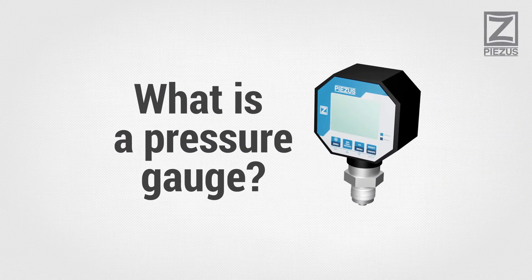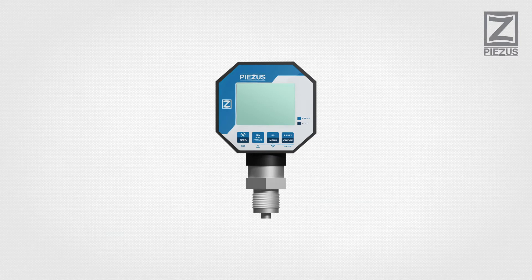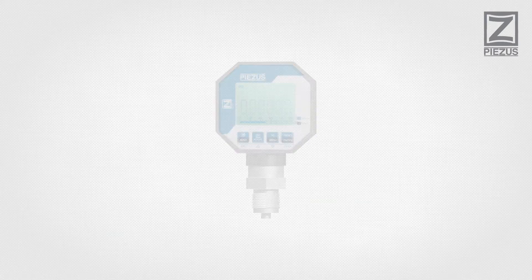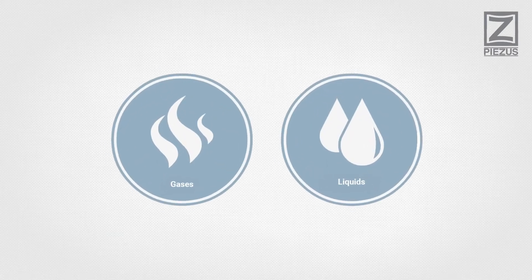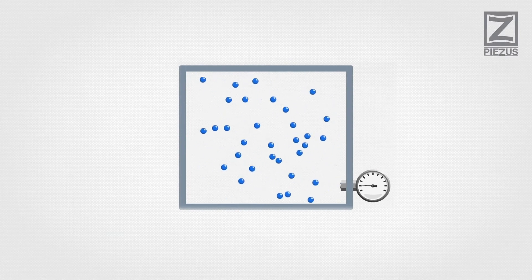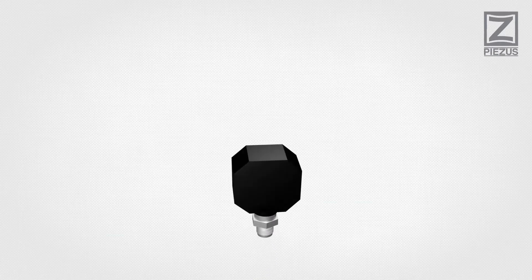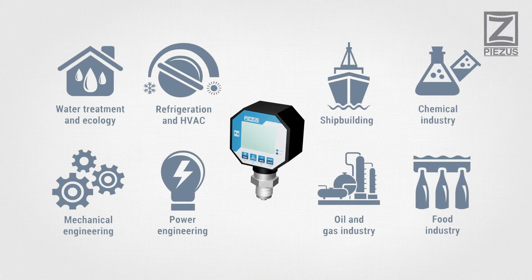What is a pressure gauge? Pressure gauges are instruments used for pressure measurement of liquids or gases. Gauges help to control pressure changes in the system using a dial or display. Pressure gauges are widely used in different industries.